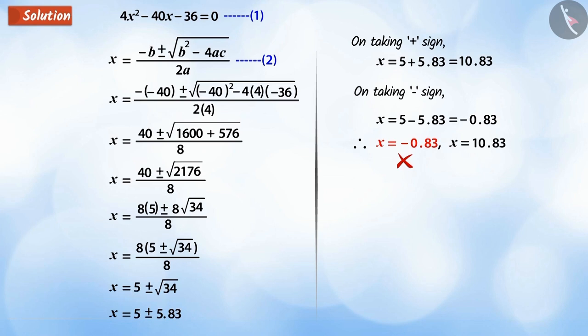Hence, we leave the value x equals minus 0.83. So, we get from x equals 10.83 that the speed of the ship is 10.83 km per hour.